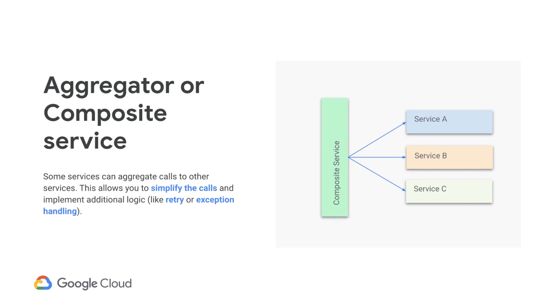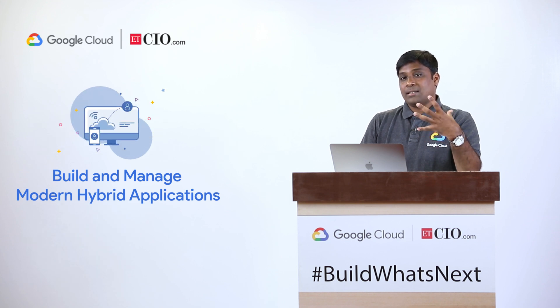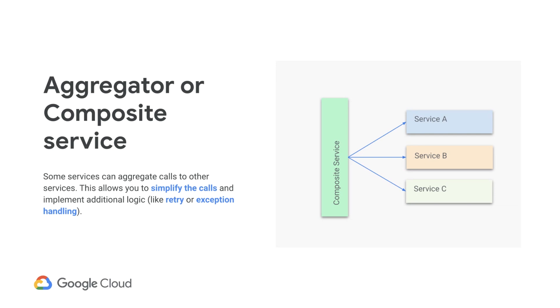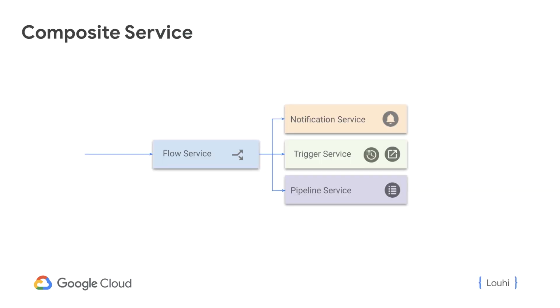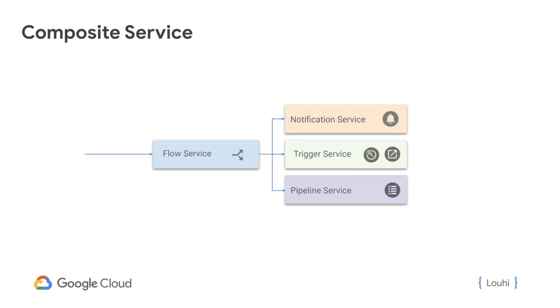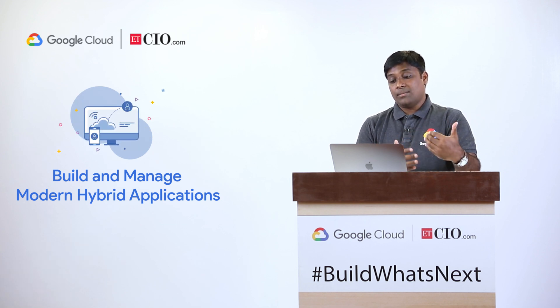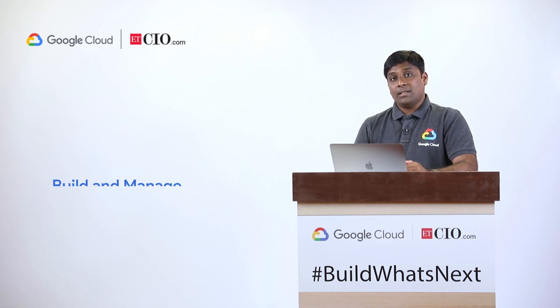Now let us look at composite service. A composite service aggregates calls to other services and helps implement more complex functionalities when dealing with multiple objects or services providing different functionalities — for example, retries or exception handling. Let us take one concrete example. I introduced the concept of flows earlier, which is a combination of triggers, a pipeline with various stages, and notifications. The flow service is implemented as a composite pattern: when the client wants to create a new flow, the flow service delegates responsibilities to each one of the individual services, so that failures or exception handling can be done at the flow service level itself rather than at the client — for example the front-end — handling each one of them separately, which would be a much more cumbersome process.